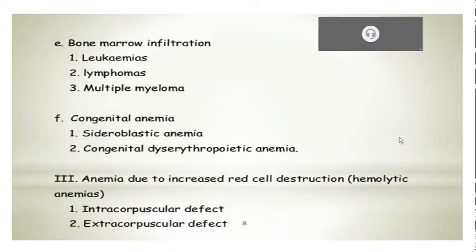And you have congenital anemia which is sideroblastic anemia, where there is excess of iron but it can be due to congenital, mostly hereditary causes, and even due to tuberculosis treatment — when you give isoniazid, that can also lead to sideroblastic anemia.